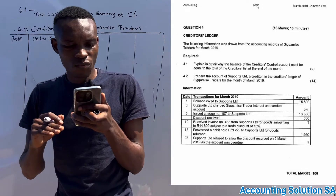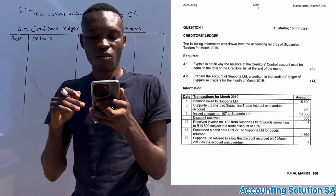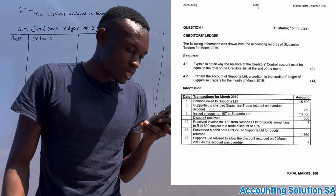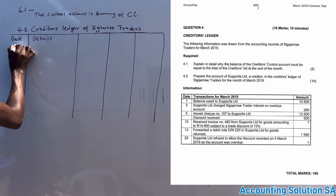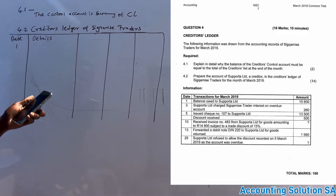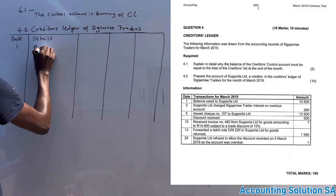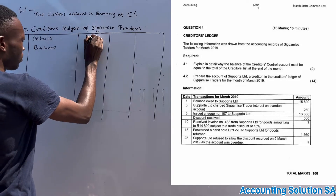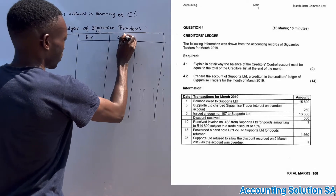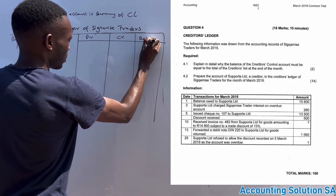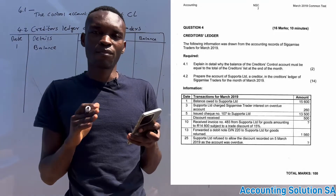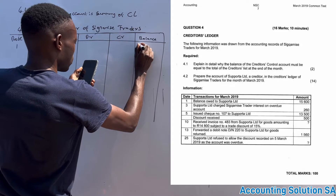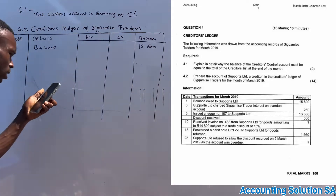For question 4.2, prepare the account of Support Ltd, a creditor, in the creditors ledger account of Sinca Misa Traders for the month of March 2019. We have a date and transaction column. We're going to have a debit side and a credit side, and we're going to have a balance recorded after each and every transaction. On the first, the opening balance was fifteen thousand six hundred.